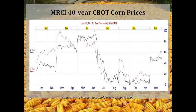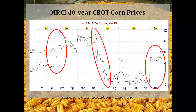This is the MRCI price chart showing 15-year and 40-year CBOT corn prices as of 2008 — slightly outdated but showing more precise fluctuations in prices. Again, we see the same seasonal patterns: prices rally in March and December but tumble in July.